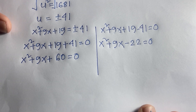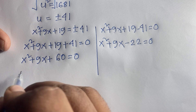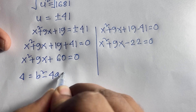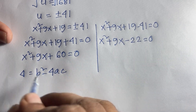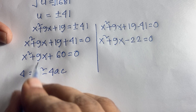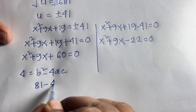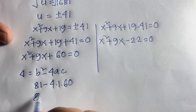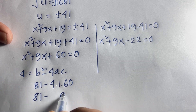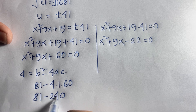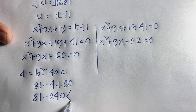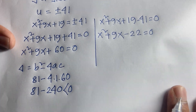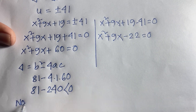For Case 2 (x²+9x+60=0), the discriminant is b²-4ac = 81 - 4(1)(60) = 81 - 240 = -159, which is less than 0, so there is no real solution in this case.